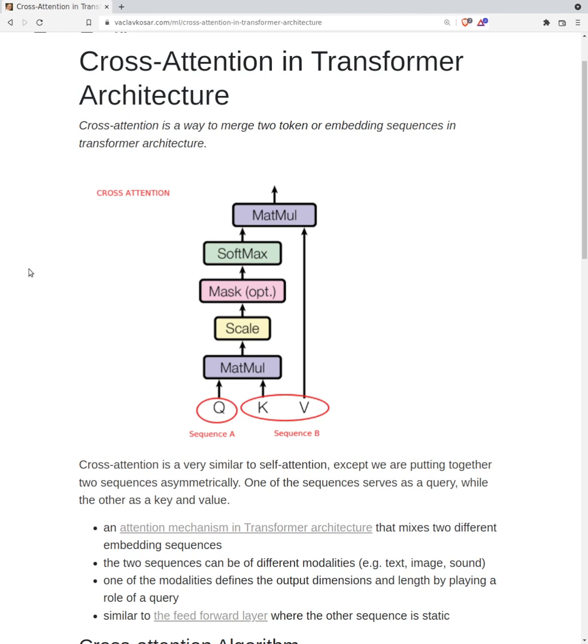This is a short video about cross attention. Cross attention is basically self-attention except we are merging two different sequences. One of the sequences serves as a query to create the query vectors, and the other sequence serves for creating keys and values.